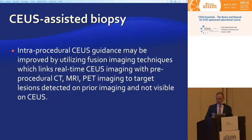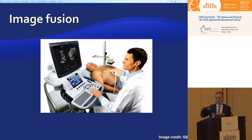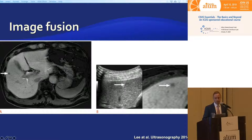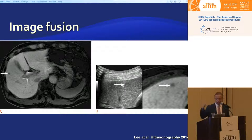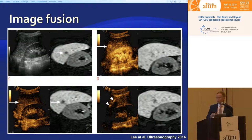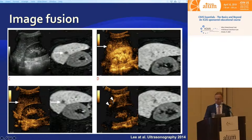We can improve procedure guidance with contrast-enhanced ultrasound further by utilizing image fusion. Some vendors have fancy systems where you can fuse your CT and your ultrasound, producing co-registered images. You can upload CT or MRI performed the same day or weeks prior, find your lesion, and fuse the transducer position with CT or MR images. With the addition of contrast-enhanced ultrasound, you can place a needle into small tiny liver lesions corresponding to abnormal areas of MRI enhancement and obtain cancer tissue.